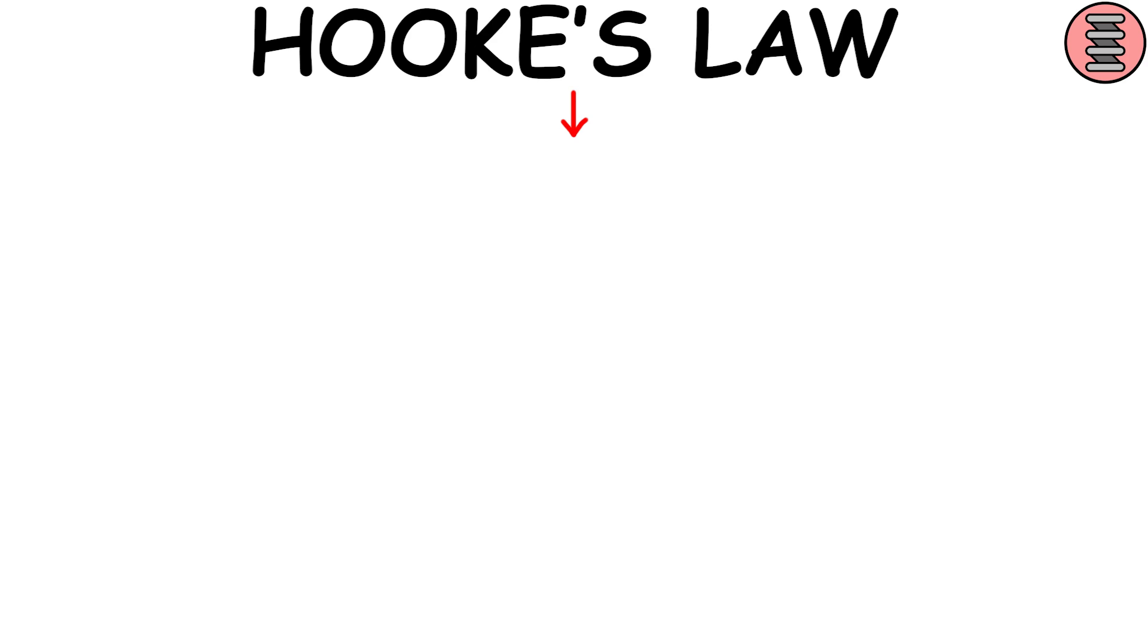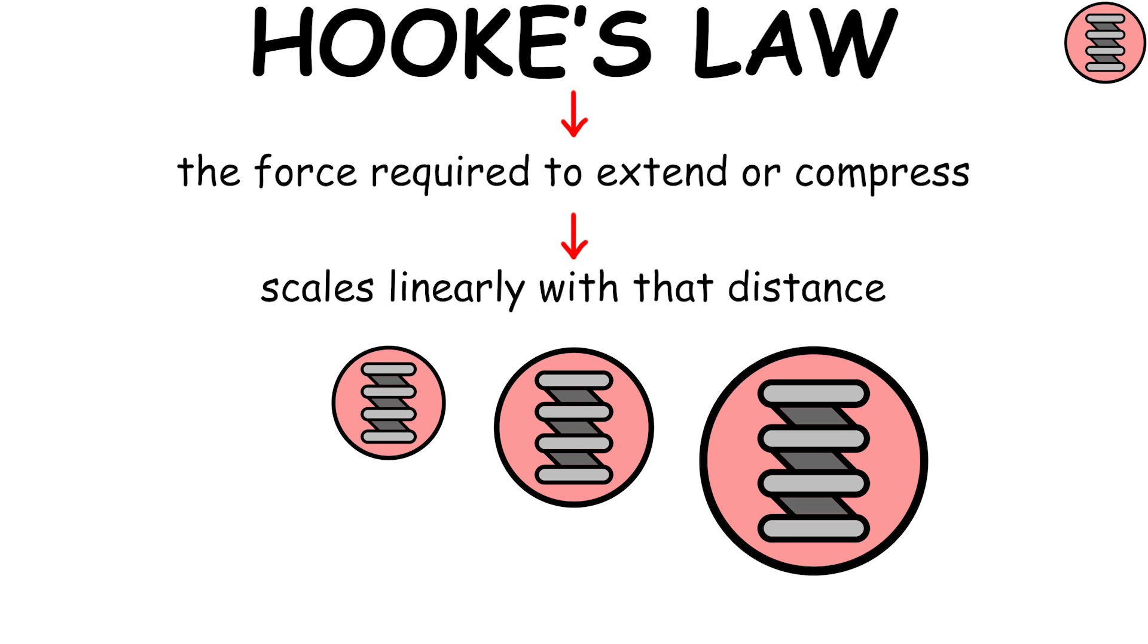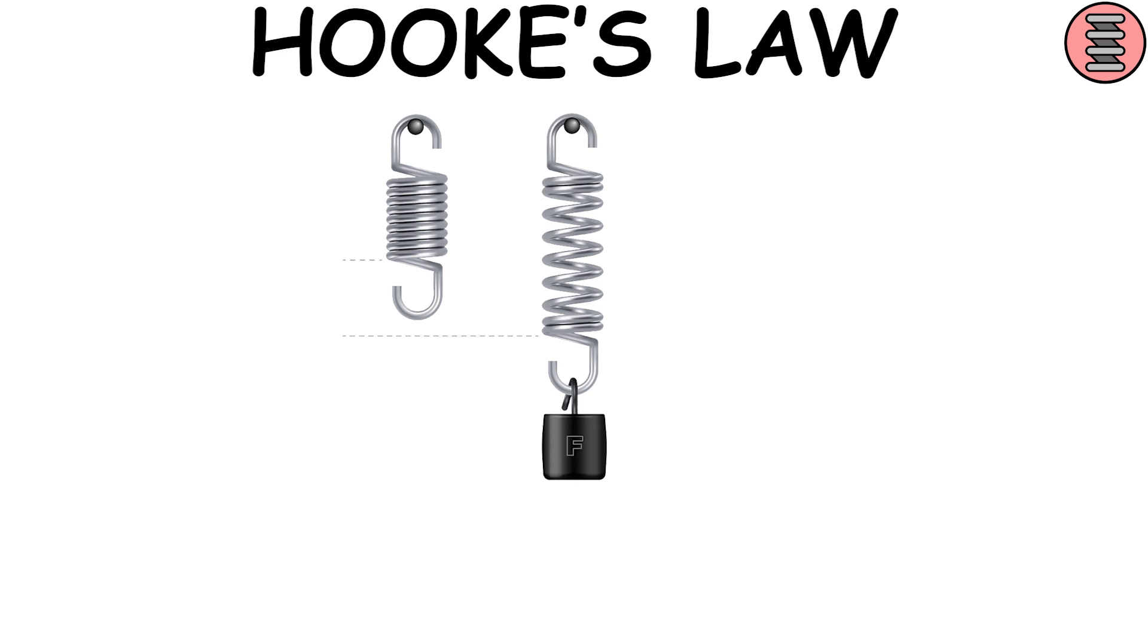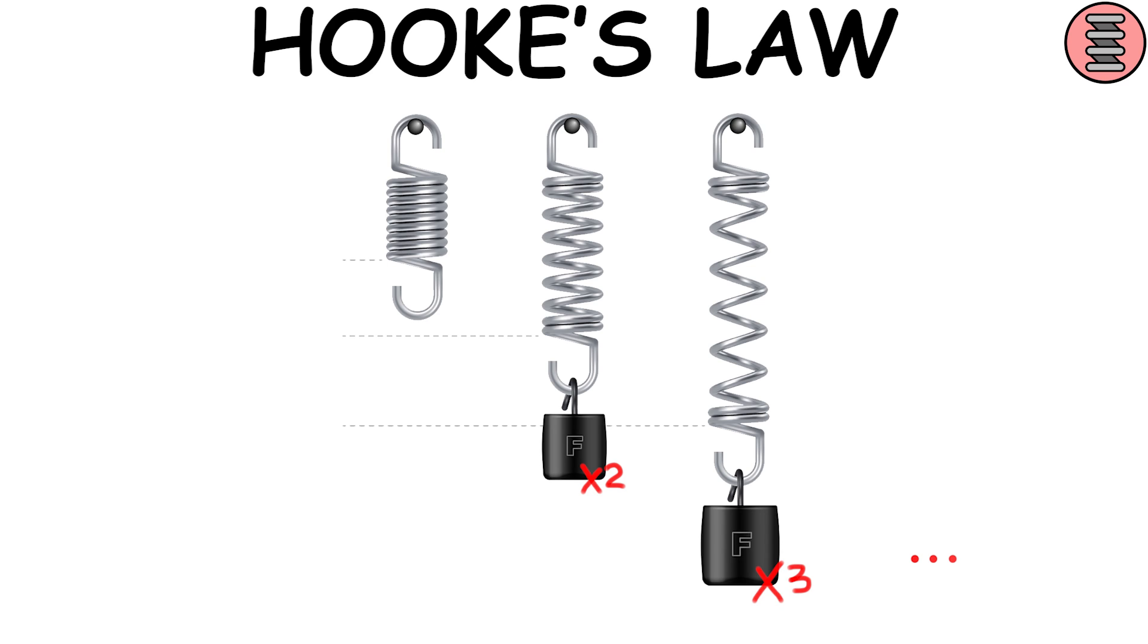Hooke's Law states that the force required to extend or compress a spring by a certain distance scales linearly with that distance. If you double the extension distance, the required force will be twice as much. If you triple the distance, the necessary force will be three times as much, and so on.